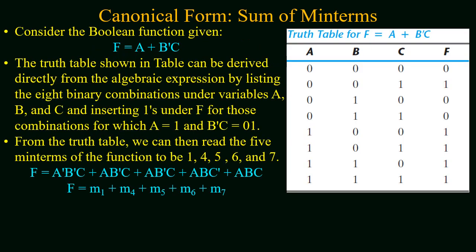Consider the same example: f = a + b'c. As the second method, instead of using boolean rules, we construct a truth table for f and identify all combinations where the output equals 1. The function is a sum of 2 terms — either term a equals 1, or the second term b'c equals 1, making the output 1. After completing the truth table, the function has an output of 1 for terms 1, 4, 5, 6, and 7. Making minterms for all these combinations and adding them gives f in the form of sum of minterms, with all variables present in every term.